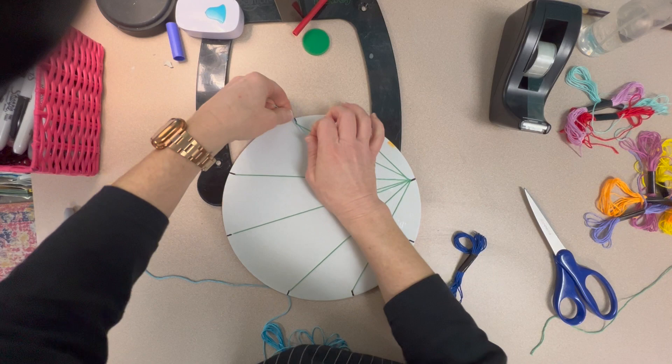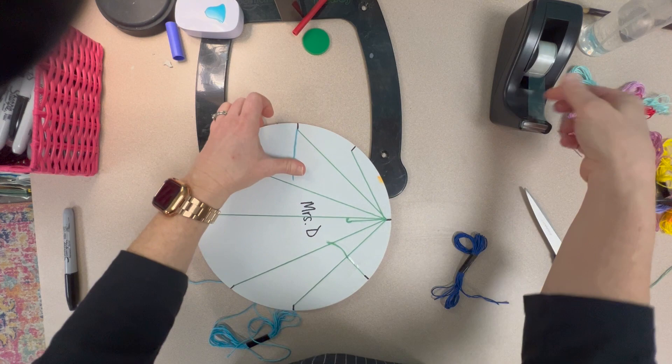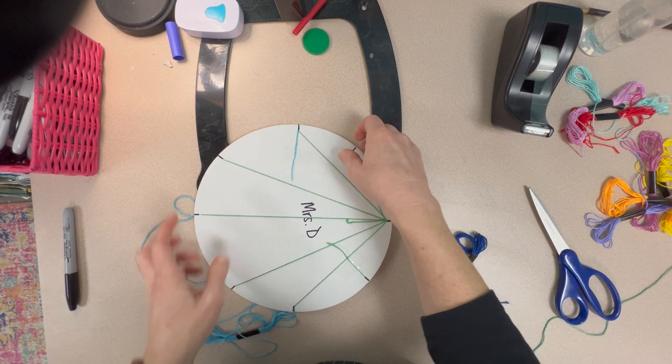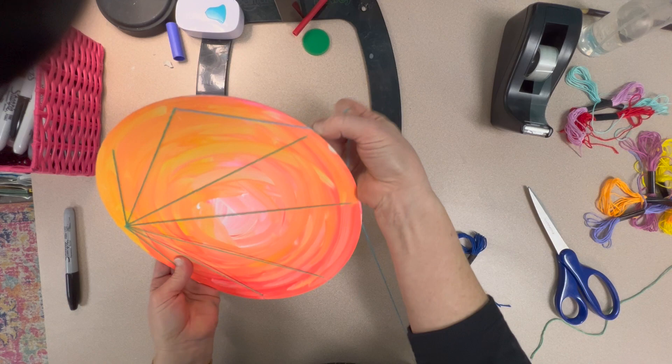You'll place it in the notch, tape it down and start pulling it through the closest notch.